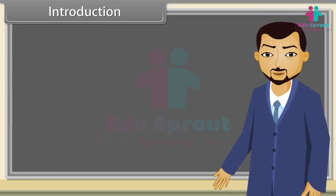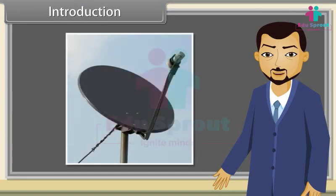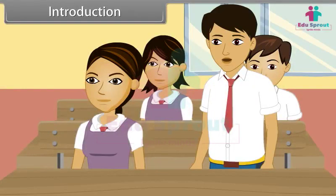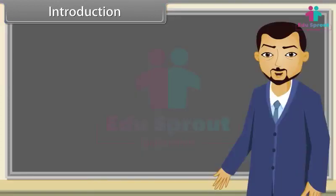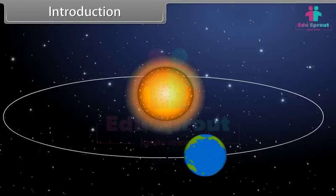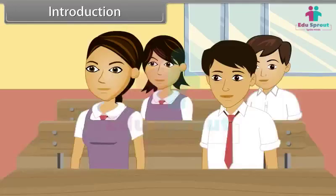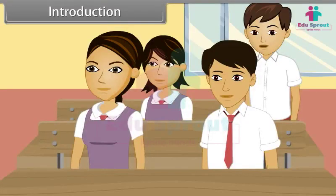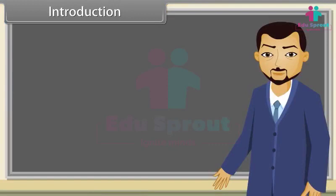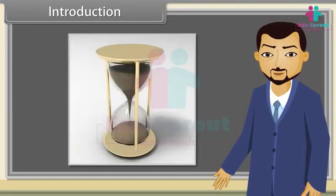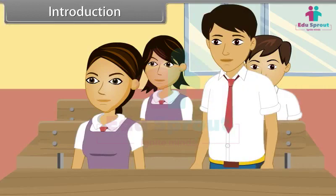How many of you have dish TV at your home? Do you know what kind of shape it has? Yes, it is parabolic shape. Do you know what kind of path earth follows while revolving around the sun? Yes, it is elliptical in shape. So finally, who will tell me what kind of shape this object has? It has hyperbolic shape.